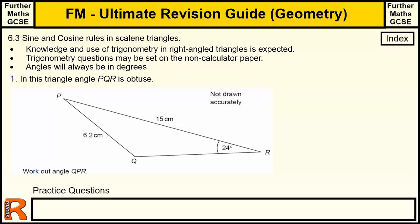6.3, Sine and Cosine Rules in Scalene Triangles. This is part of my Ultimate Revision Guide for Further Maths GCSE, part of the Geometry section. If you want to go back to the index of geometry, click on this button here. Any exam questions I've done on geometry that's to do with sine and cosine rules, I shall put into this bar down here so you can practice on those.